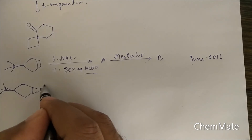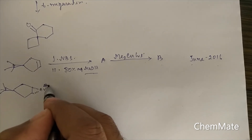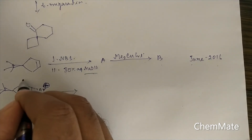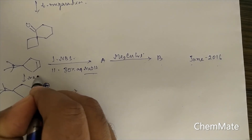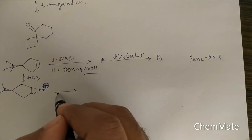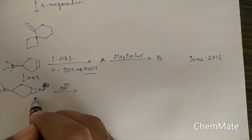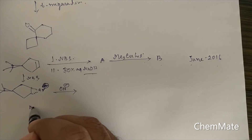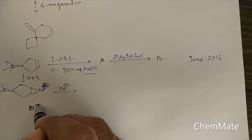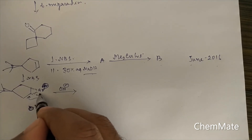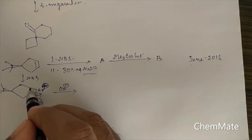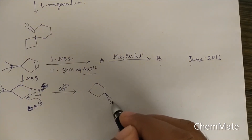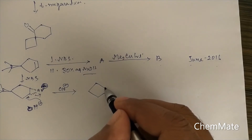The tertiary butyl group is above the plane, so the bromonium ion intermediate will form from below the plane. When aqueous NaOH is added, OH⁻ will attack from above the plane to open up the bromonium ion intermediate. The OH⁻ may attack at either carbon, so the OH will be above the plane and the Br will be below the plane.